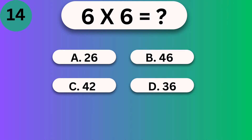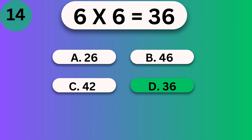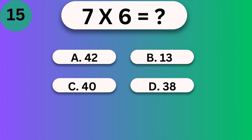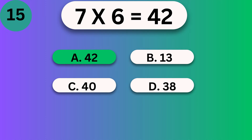6 times 6. 6 times 6 is 36. 7 times 6. 7 times 6 is 42.